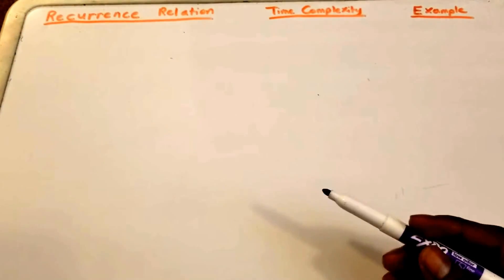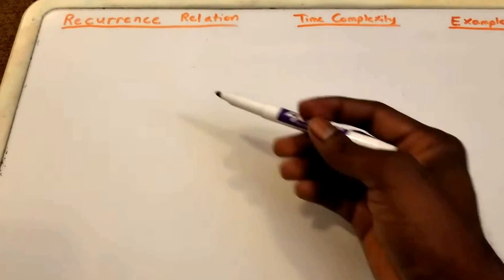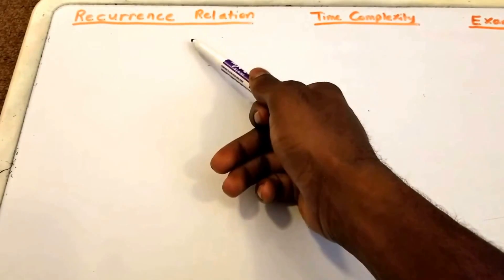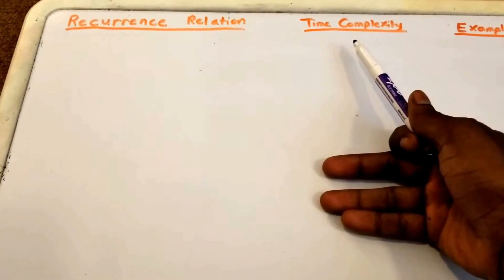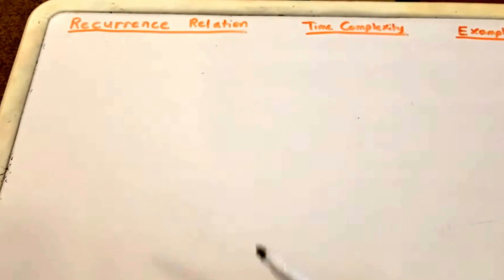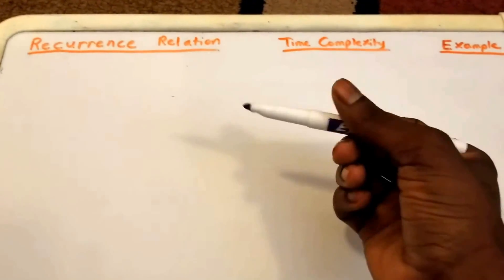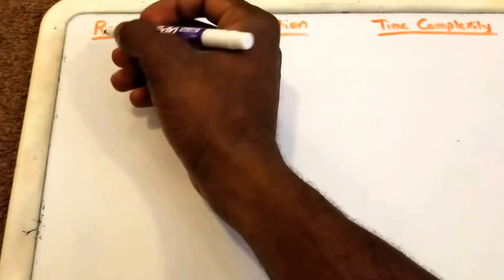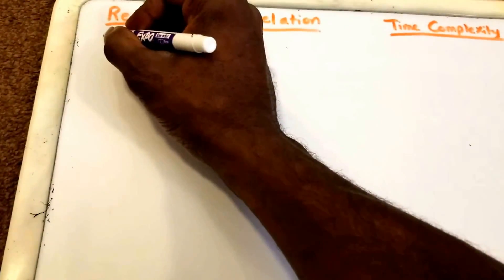Hey guys, welcome to this video on recurrence relations. Here I'm going to show you guys a sort of cheat sheet for common recurrences. I'll put the recurrence relation here and then the time complexity of the recurrence relation here, and then try to give an example through an algorithm that you may have heard of before. So let's go ahead and get started.